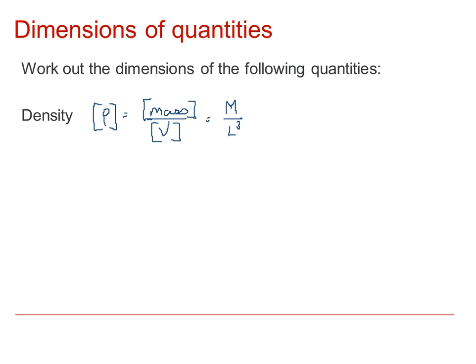So we've got M over L cubed, or M L minus three. The other way we could have considered that would be to look at the units. The units are kilograms meters minus three, or kilograms per meter cubed.